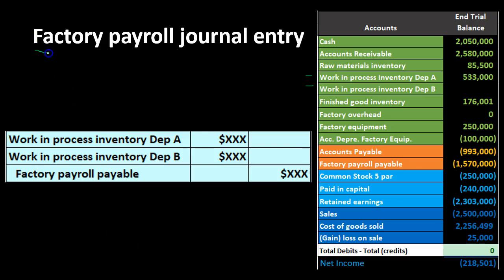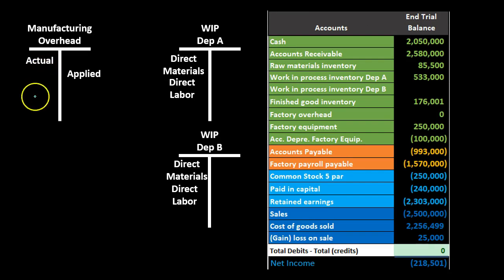Always note that we're talking about factory payroll — workers who work in the factory. In a book problem, if it says 'factory,' it relates to inventory. If it says 'admin,' it is not part of inventory and would typically be a period cost.